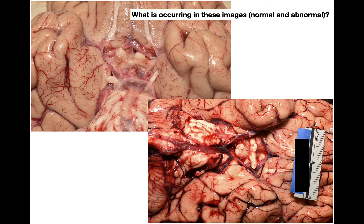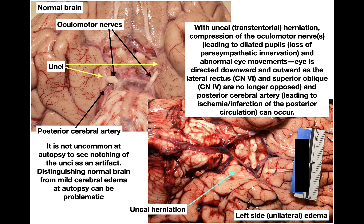Looking at these images, on the top left is essentially a normal brain where you can see the unci, the oculomotor nerve, and the posterior cerebral artery. For medical students, this is a high-yield anatomic location because of the complications associated with uncal herniation that we're going to discuss.